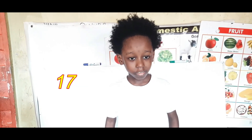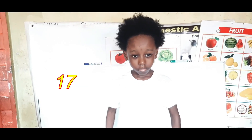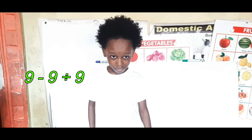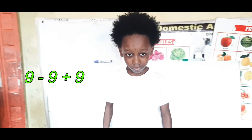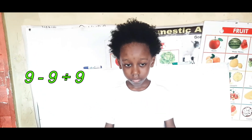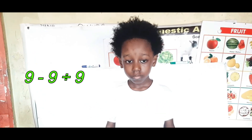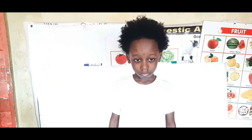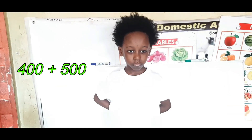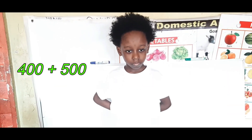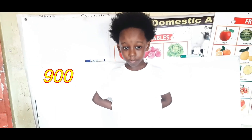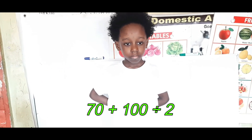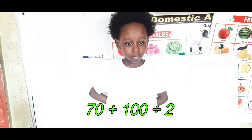70. Very good. 9 minus 9 divided by 9. 8. Very good. 400 plus 500 equals 900. 70 plus 100 divided by 2.